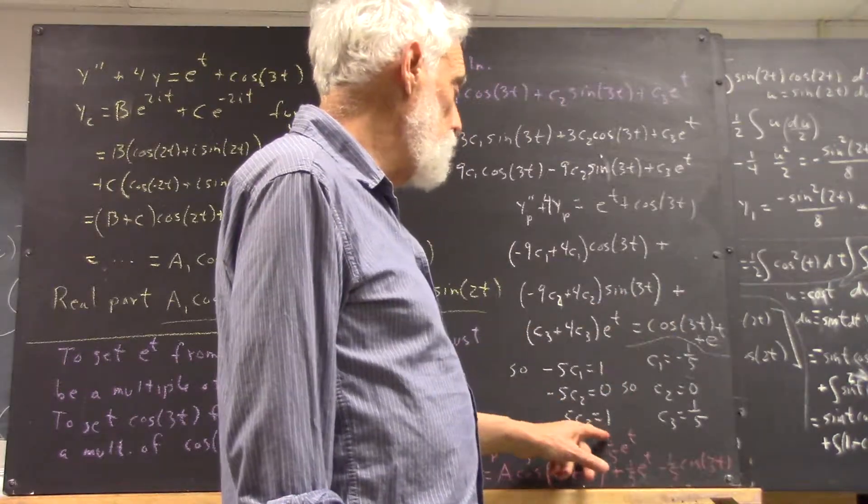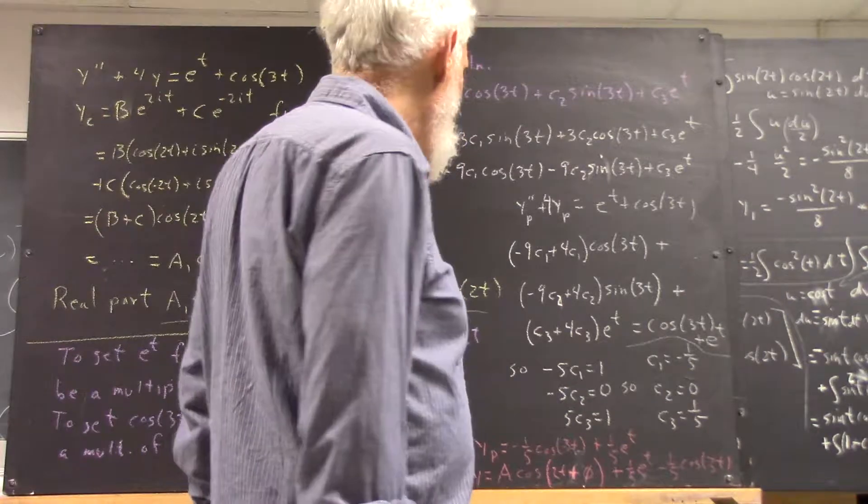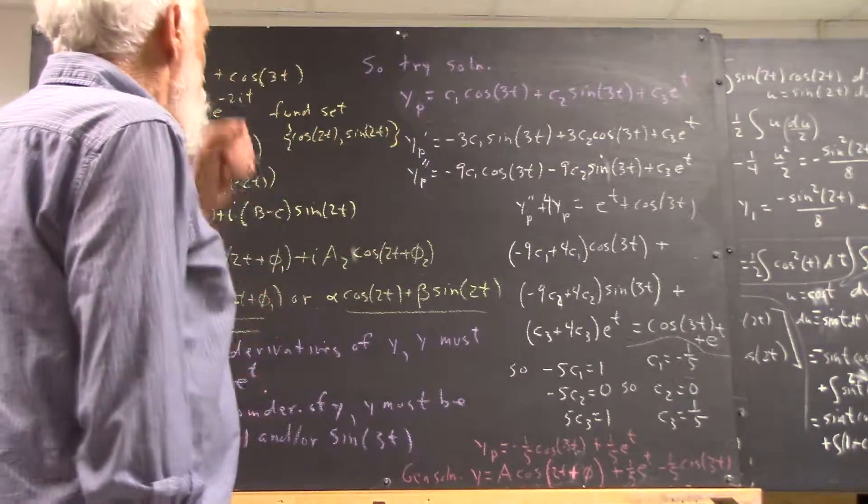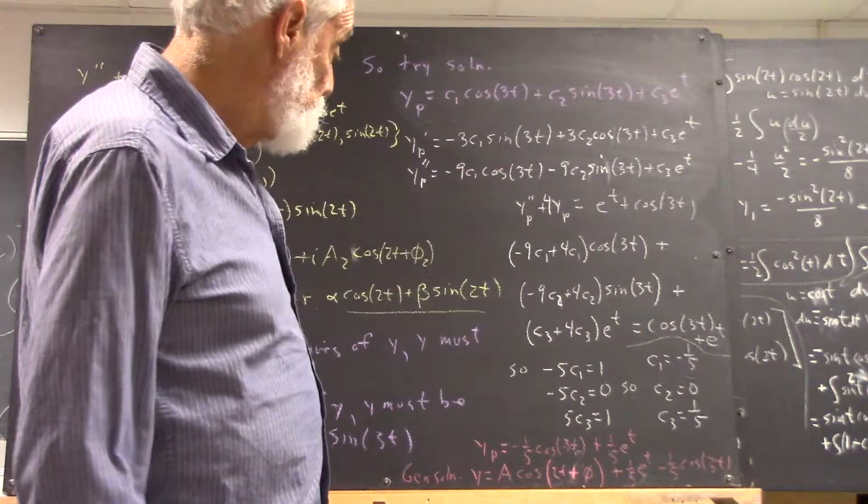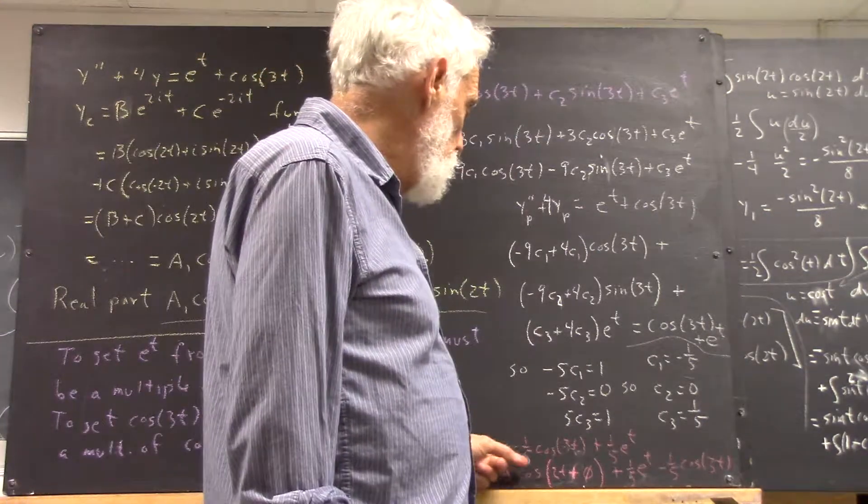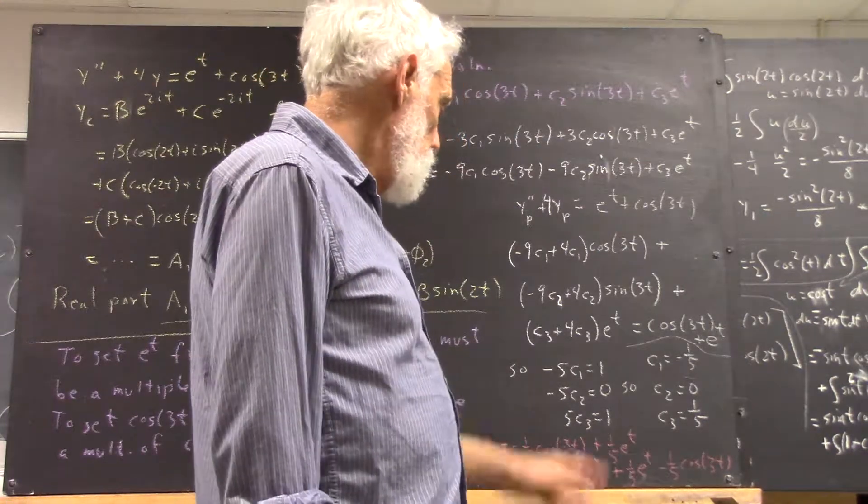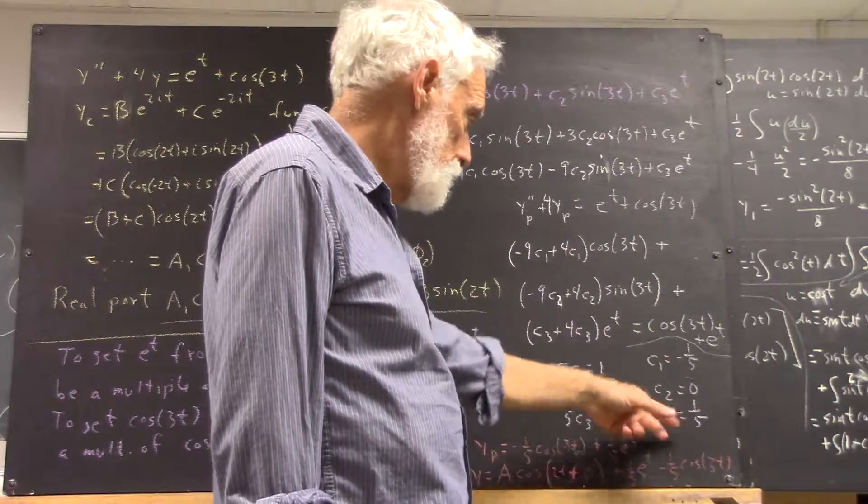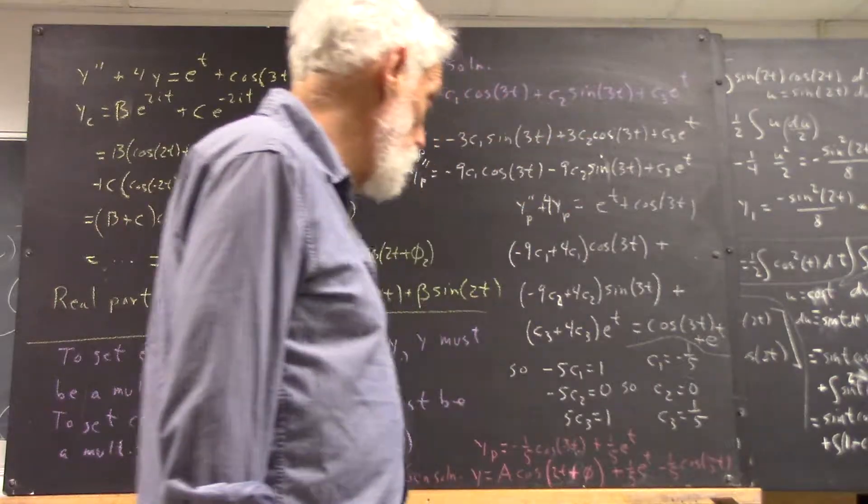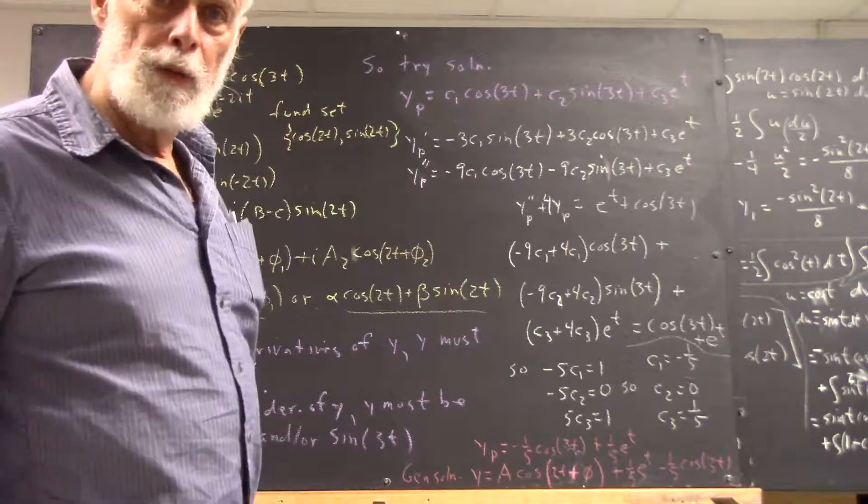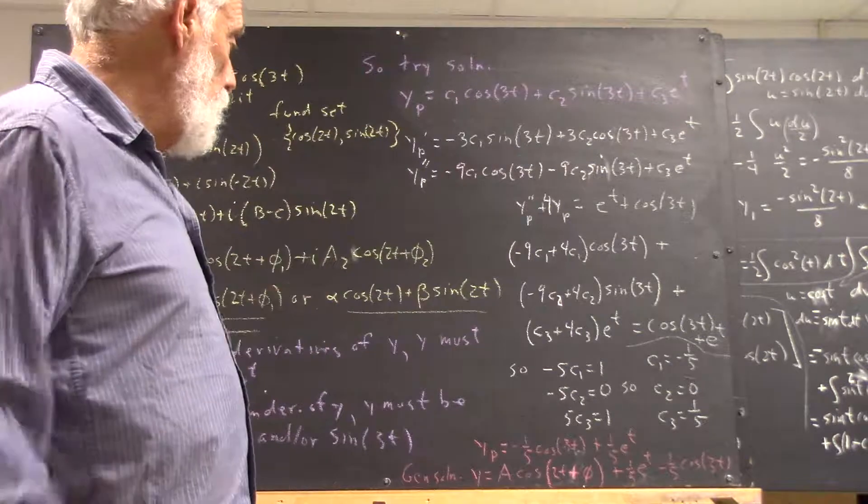That means our particular solution is negative 1/5 cosine of 3t plus 1/5 e to the t, just plugging these constants in. The sine goes away, and so forth. That's really straightforward, so you should understand that.